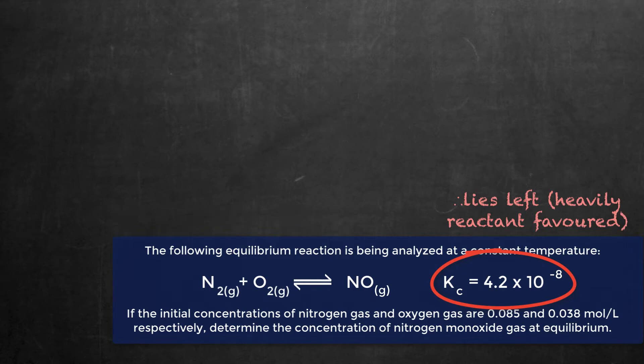What that tells us is that when this reaction comes to equilibrium, the concentrations of the reactants aren't really going to change all that much and there's not really going to be all that much product. As a result, we can use the approximation method which is going to make our calculations easier. Even though it might look like we have to use the quadratic formula, that's not going to be the case.